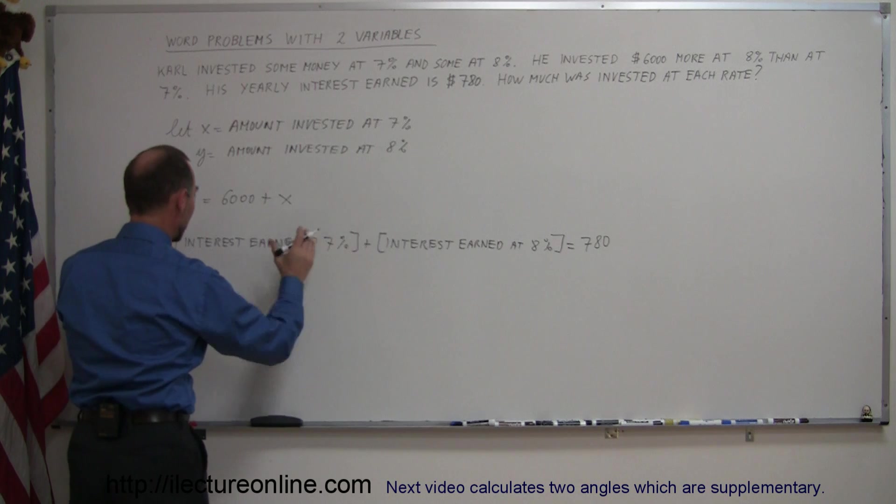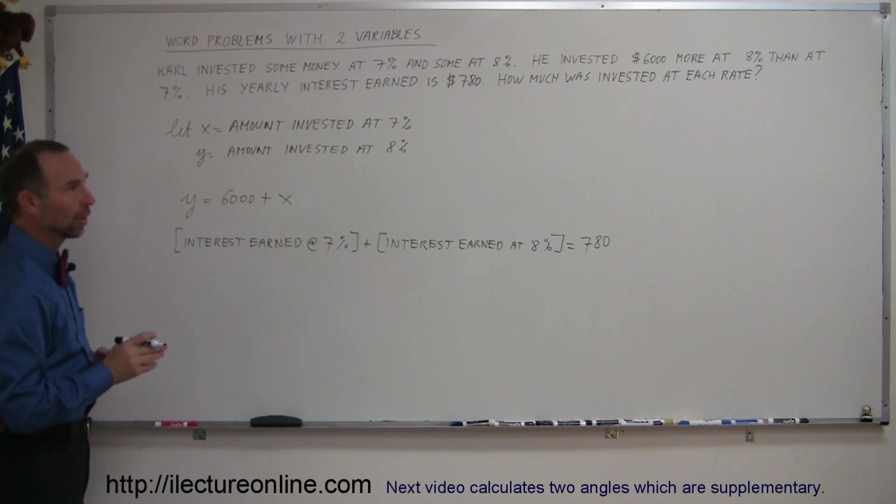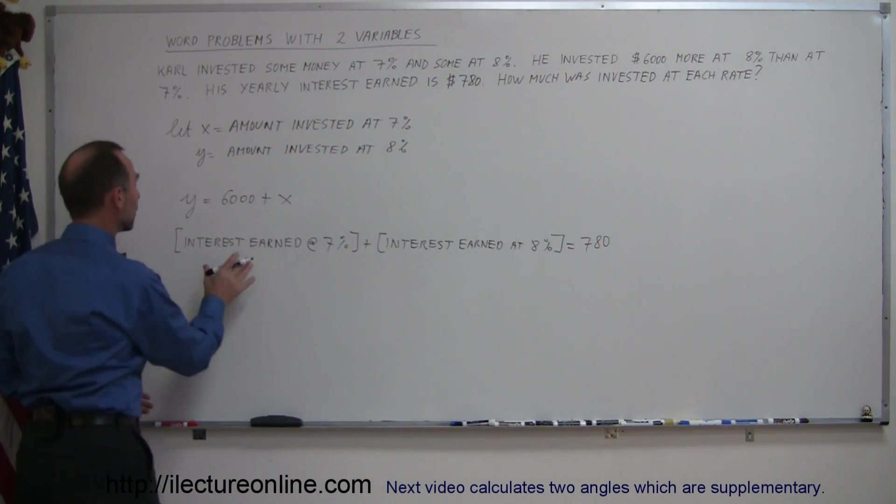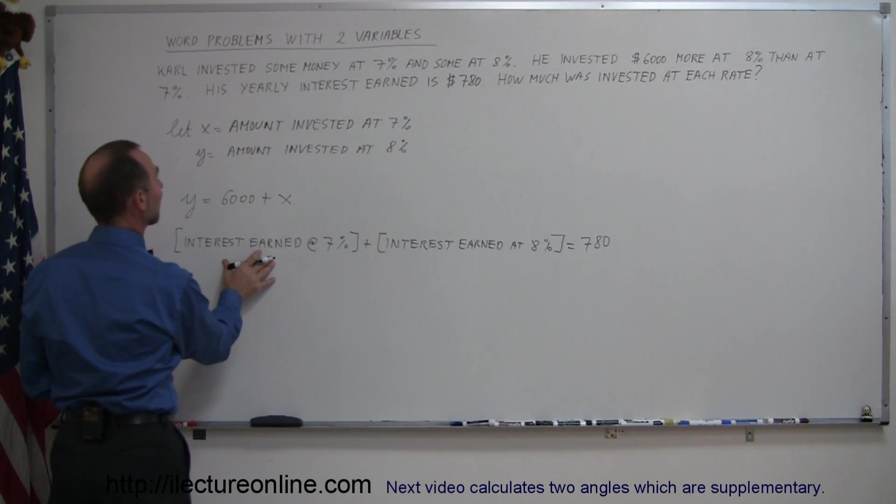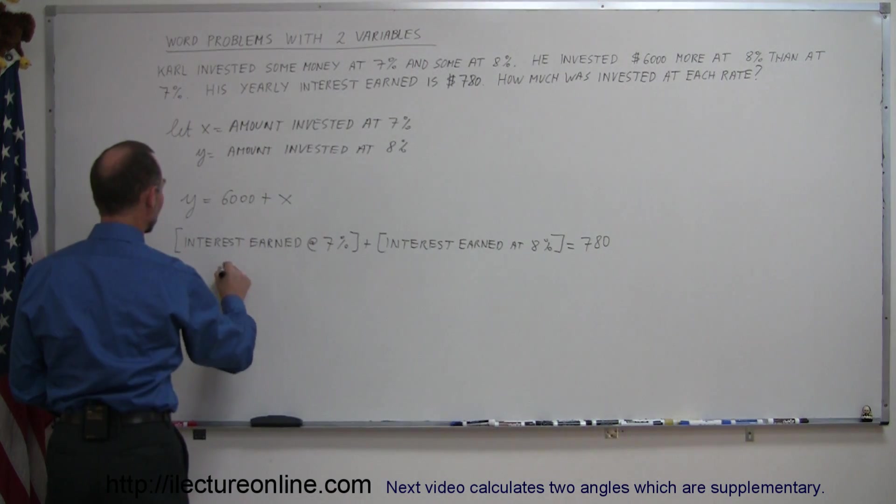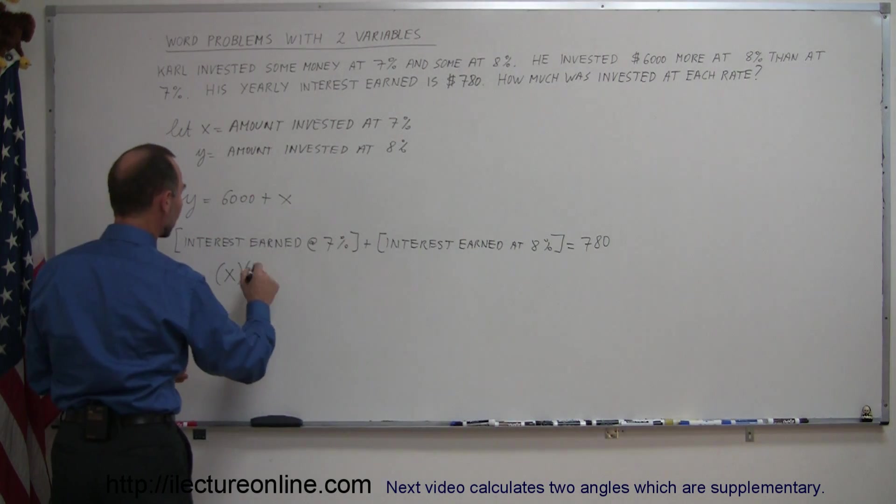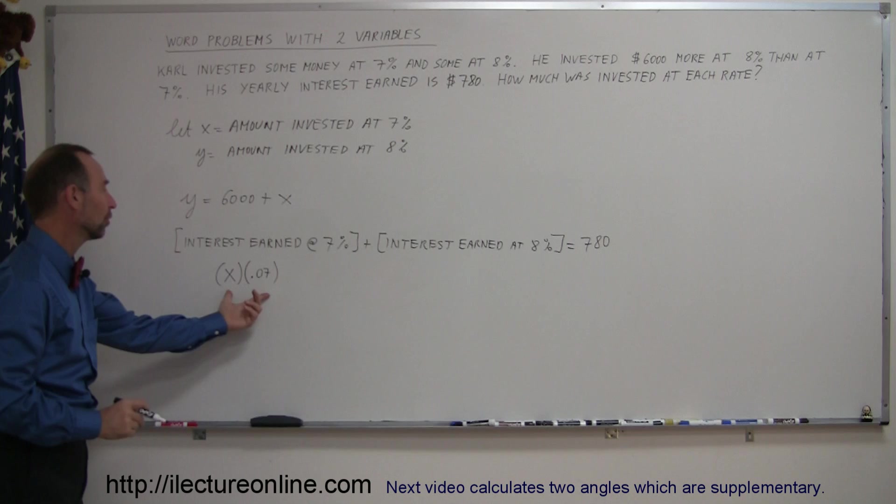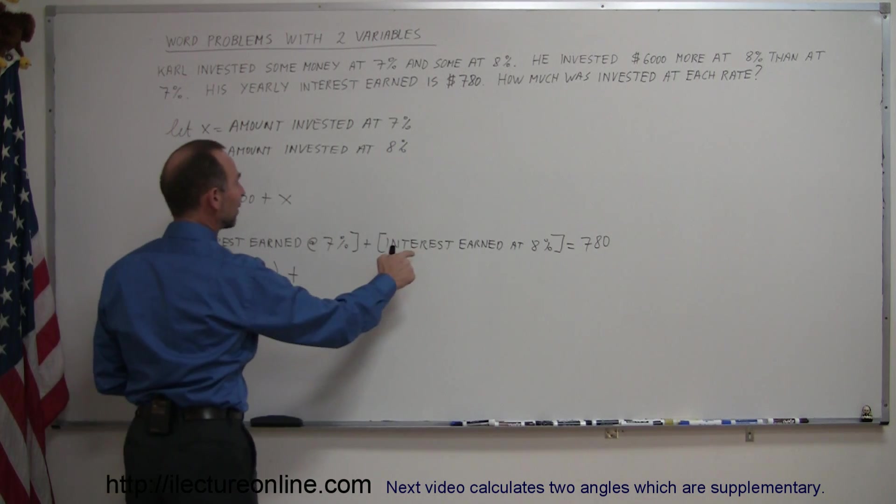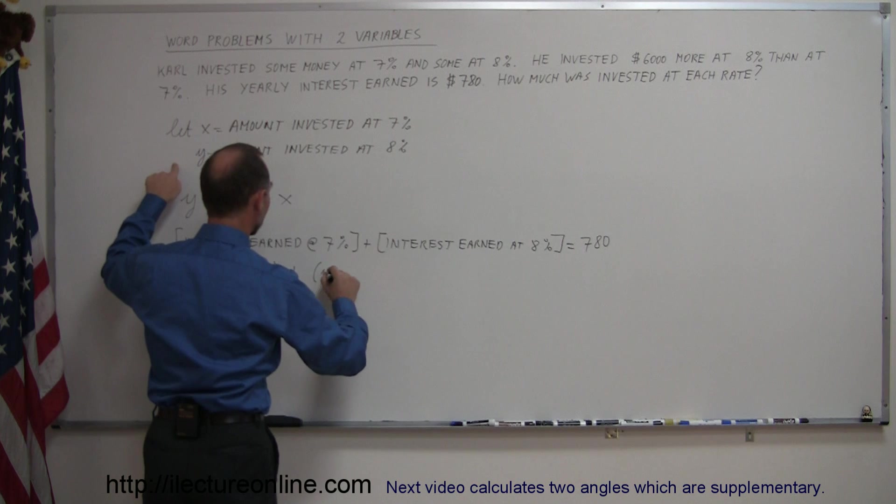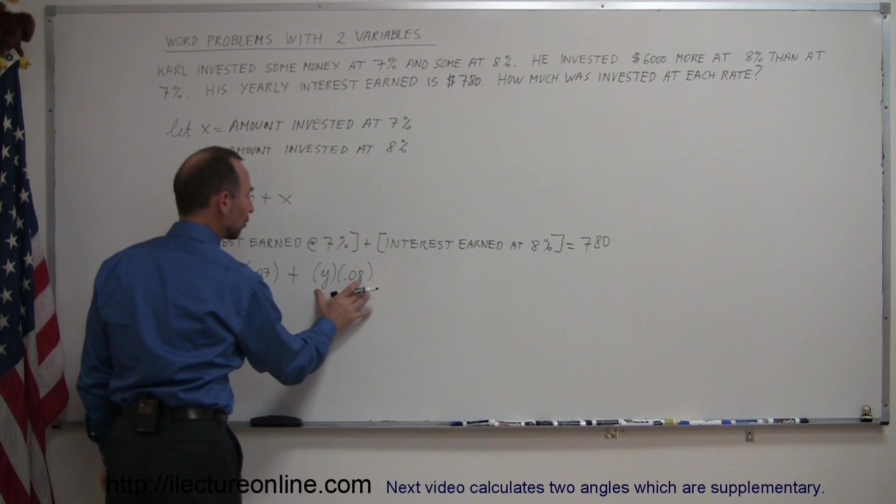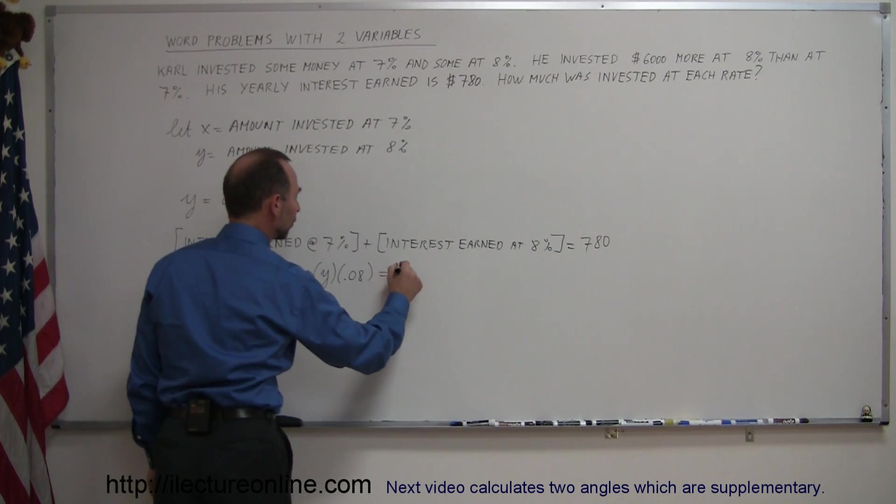The way you express the interest earned at 7% is you take the amount invested at 7% and multiply that times the interest rate. So the amount invested at 7% times the interest rate, which is 0.07, that's the amount of interest earned at 7%, plus the amount invested at 8%, which is y, times the rate, which is 0.08. That's the interest earned at 8%, and the two combined must add up to 780.